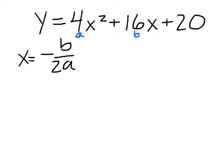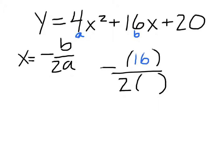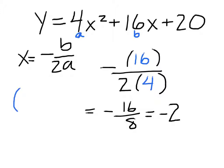So that's what we're going to plug in to this. We have minus something over 2 something. The top is B, that's 16, and the bottom is A, that's 4. So that looks like 16 over 8, and 16 over 8 is 2 — so minus 2. For our ordered pair, the X is minus 2.